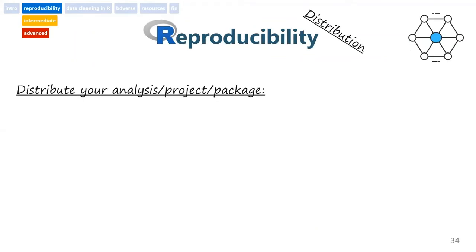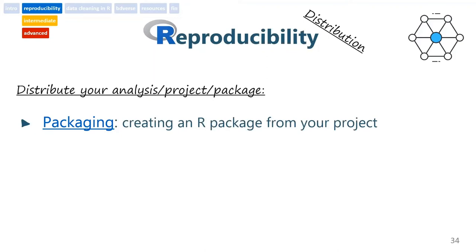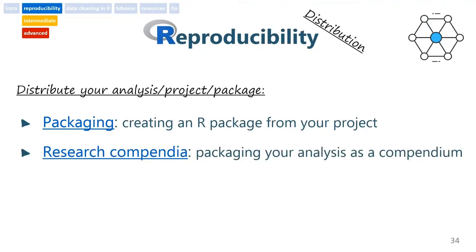Finally, we need to deal with the distribution of the entire project or analysis. One way of doing it is by creating a package for your entire analysis that supports the installation of the different dependency packages and sets a specific version for them. This is a more frightening task than it actually is. The second option is to combine the packaging with Docker and create an entire research compendia, which is a really standardized and stable way of making sure your analysis is forever deployable.